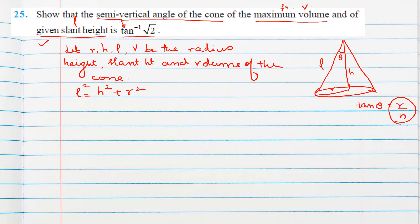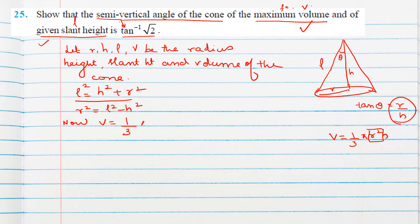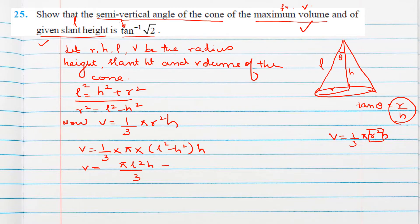The slant height relationship is given. For the volume, we know V = (1/3)πr²h. We substitute r² = l² − h² from the slant height expression. So volume becomes V = (1/3)π(l² − h²)h = (π/3)(l²h − h³). This expresses volume in terms of one variable, h.